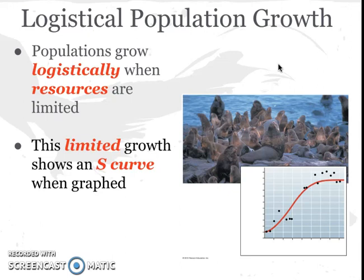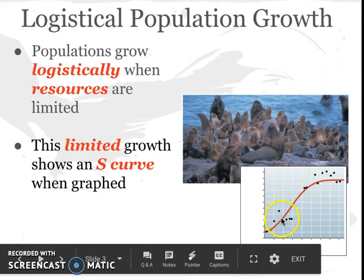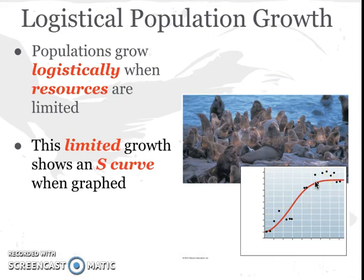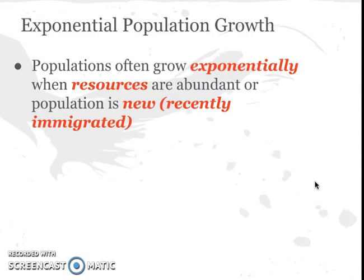As there are plentiful resources for all individuals, the population grows very quickly, which is why we see the line increase. Eventually there become so many individuals that there's not enough resources for all of them, and so the population growth levels out — it doesn't continue to increase because there's simply not enough resources for all of the organisms.